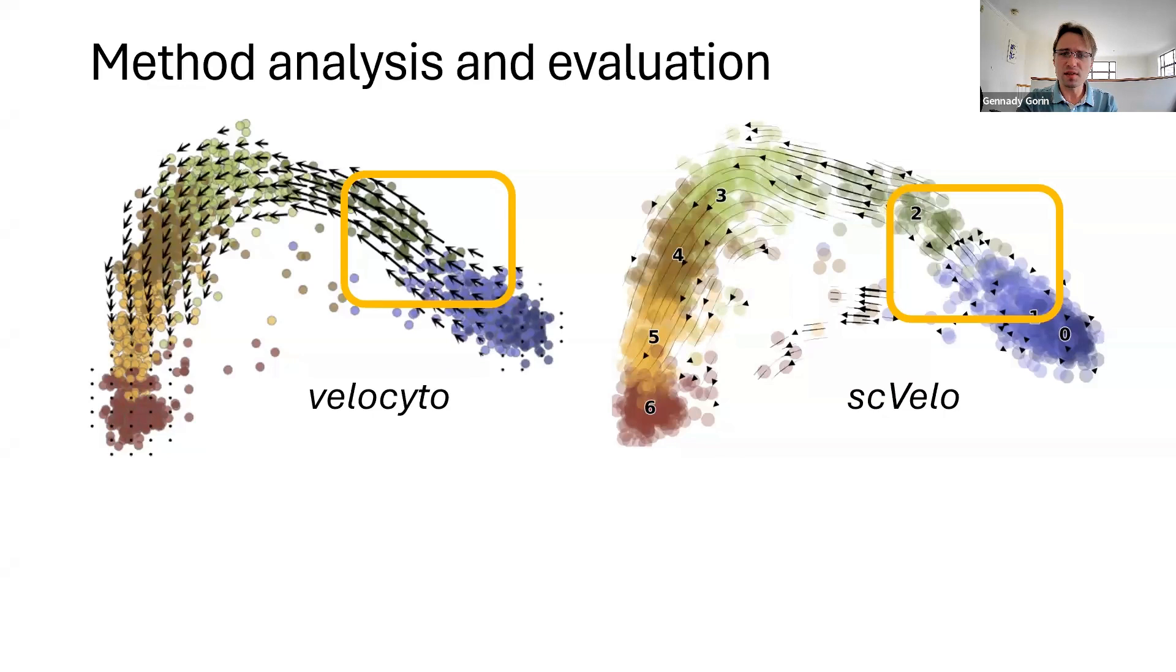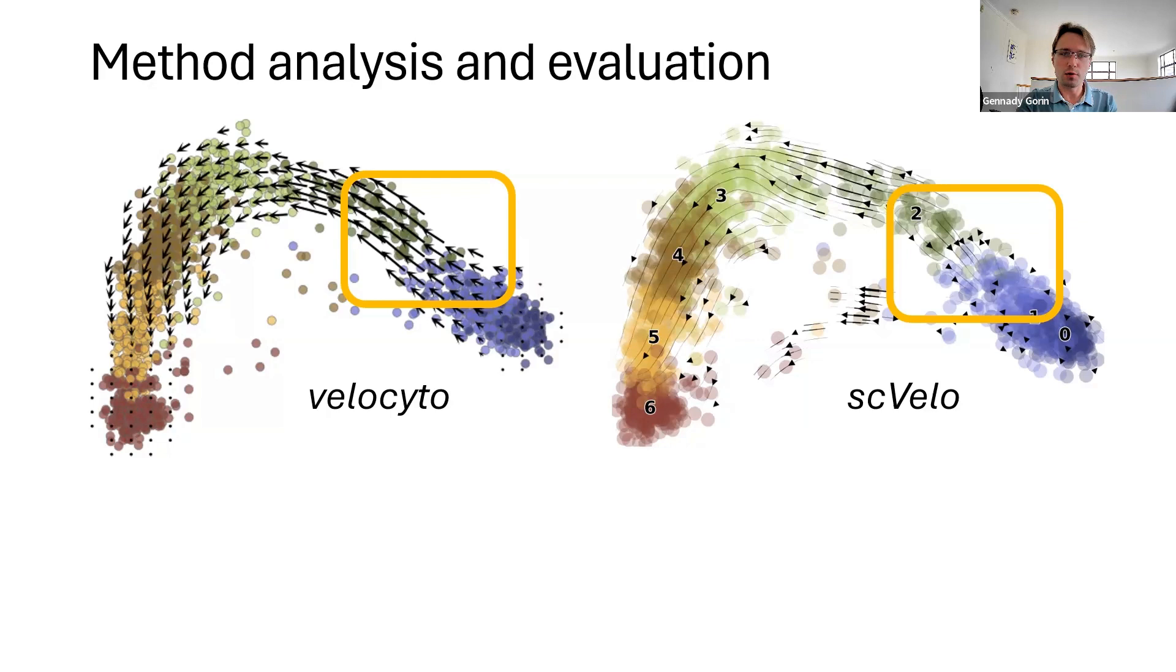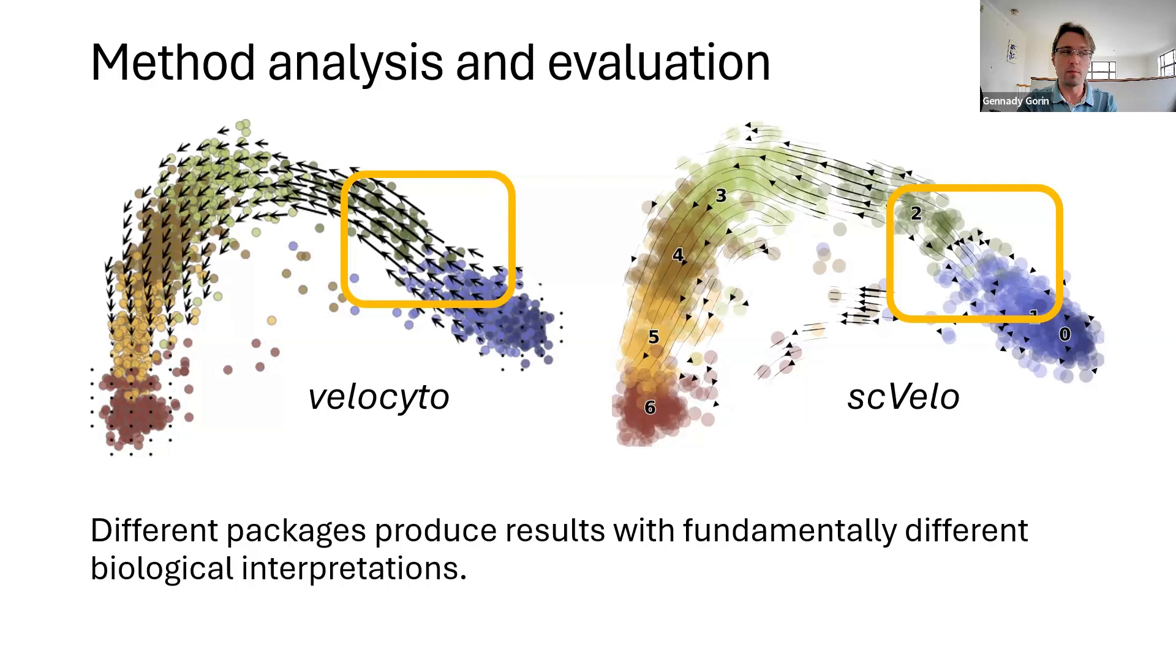But sometimes different packages fail catastrophically. Here we're looking at the exact same data, different implementation, and it reverses part of the trajectory and tells a completely different story. So, using physical approaches, we can ask questions like, why does this work? Why does it fail sometimes? Generate synthetic data, as well as try to understand the workflows and see where they might violate physical assumptions.